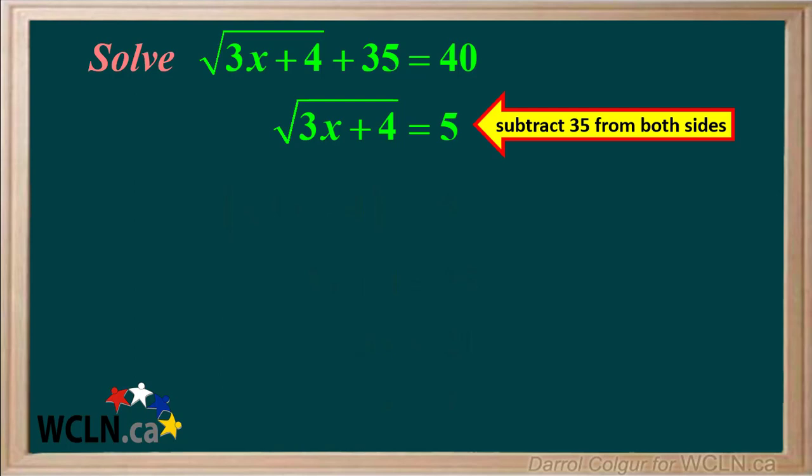We have a square root radical isolated, so the next step is to raise both sides of the equation to the power of 2, or square both sides.